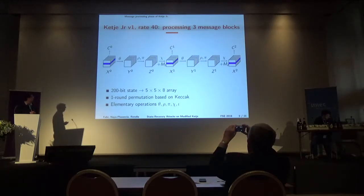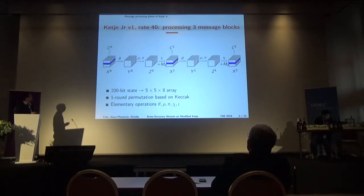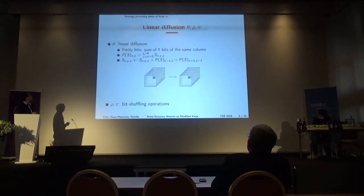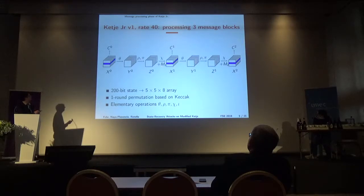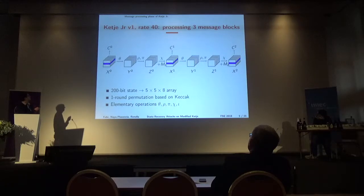When we output three message blocks with KETJER version 1, we have two consecutive rounds with theta, rho, pi, chi, and message addition. When we add the message, we output rows of 40 bits — we have a rate of 40 bits in each row.